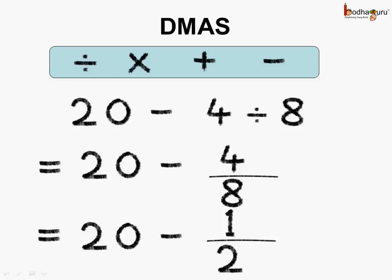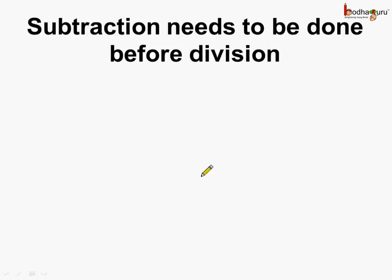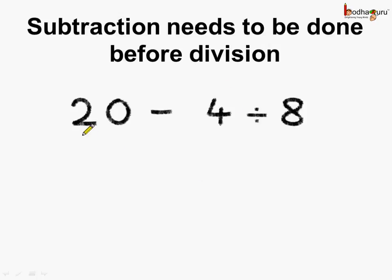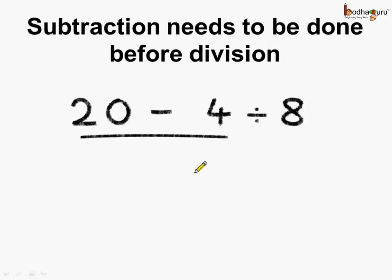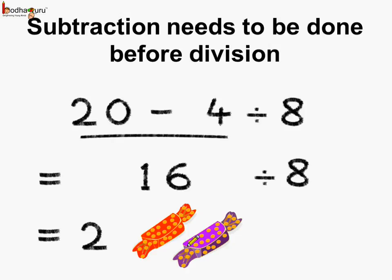Is this the correct answer? No, this is wrong. Then what should be done? In this case, subtraction needs to be done before the division, like 20 minus 4 divided by 8. To get the correct answer, as Khushi took 4 chocolates first and then divided it amongst her 8 friends. So, first we need to do 20 minus 4, and then we need to do the division. If we do 20 minus 4 first, we get 16, and then we divide it by 8, so we get the answer as 2. Each of the friends gets 2 chocolates, and this is the correct answer.